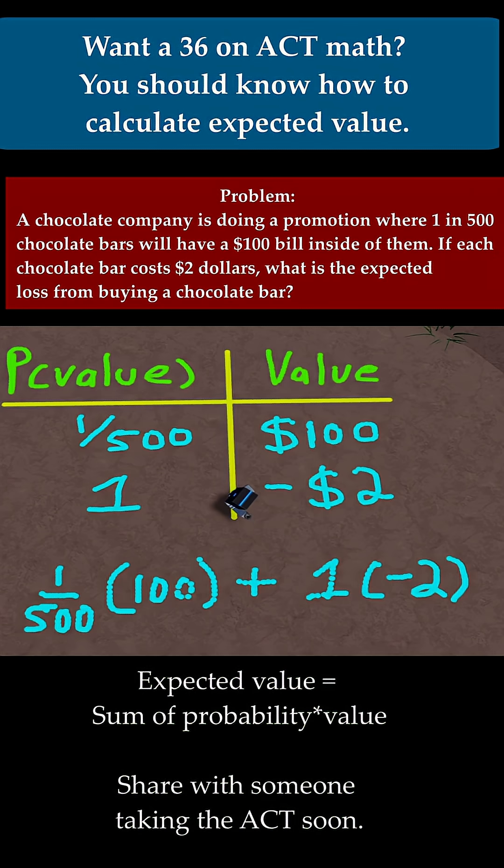Now we just compute this and add. 1 over 500 times 100. Let me just rewrite this as 100 over 500. And therefore, that's just 1 fifth. And 1 fifth is just 0.2. And then 1 times negative 2 is obviously just negative 2.